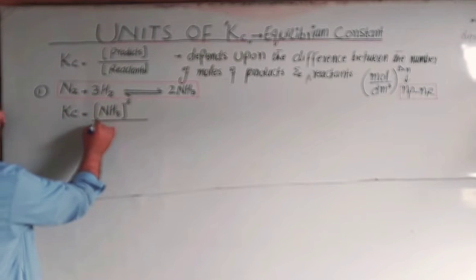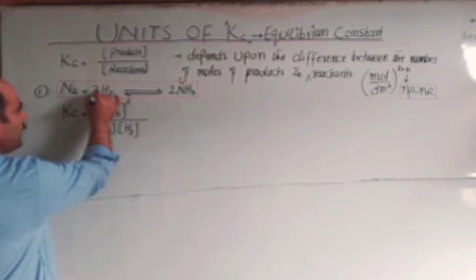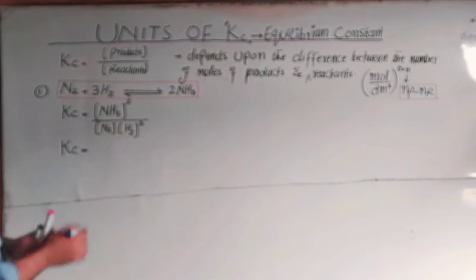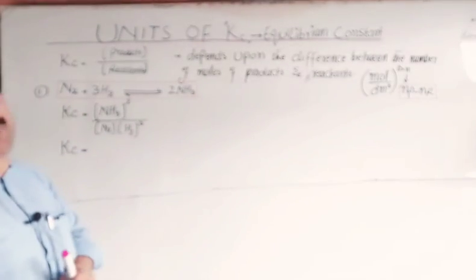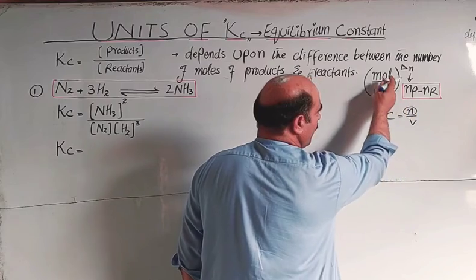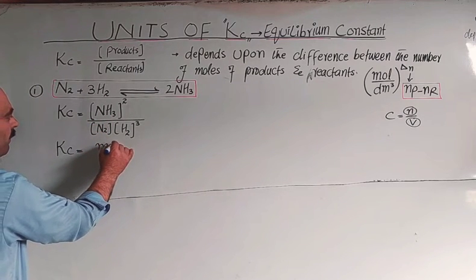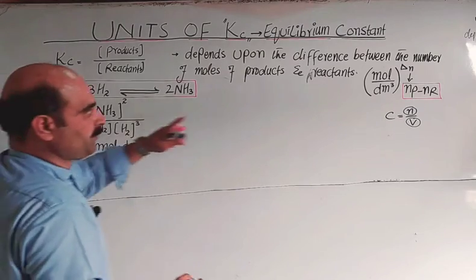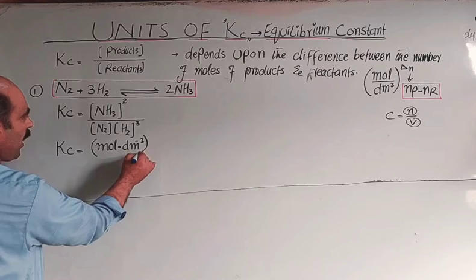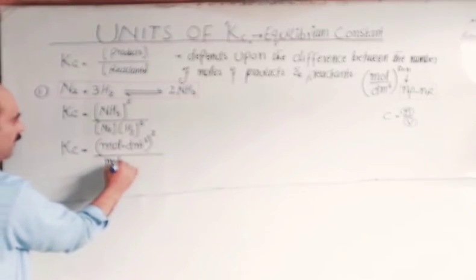Divided by the concentration of reactants: concentration of nitrogen multiplied by concentration of hydrogen raised to the power of its coefficient three, from the balanced equation. So Kc equals concentration of NH₃ squared, divided by concentration of N₂ multiplied by concentration of H₂ cubed. The concentration unit is mole per decimeter cube.